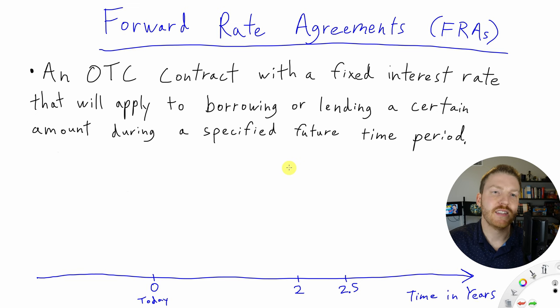A forward rate agreement is an over-the-counter contract with a fixed interest rate that will apply to borrowing or lending a certain amount during a specified future time period. Now, let's talk about why someone might use a forward rate agreement.